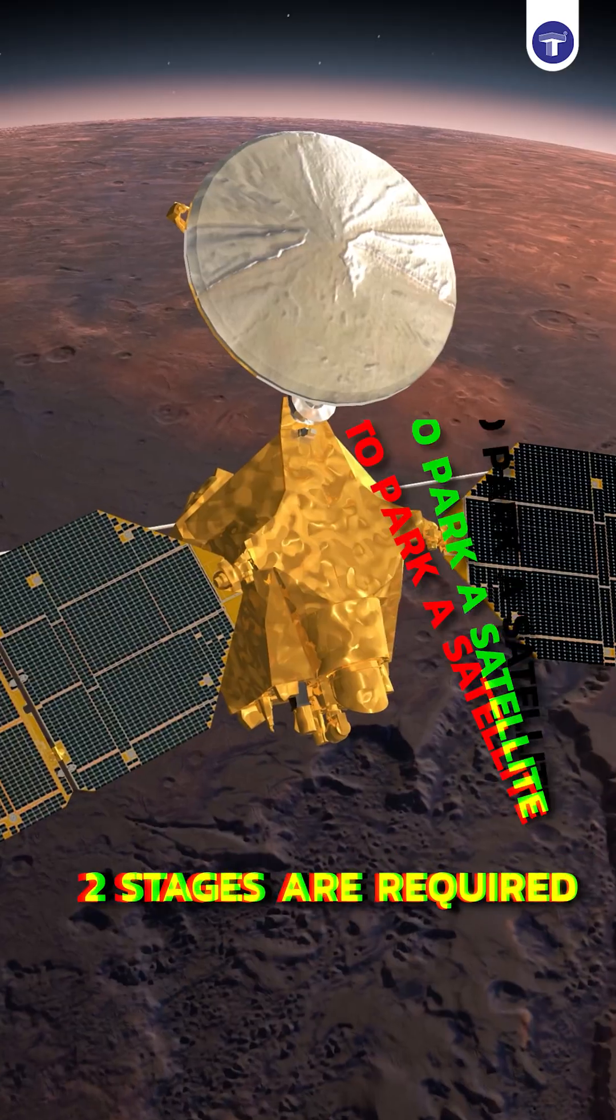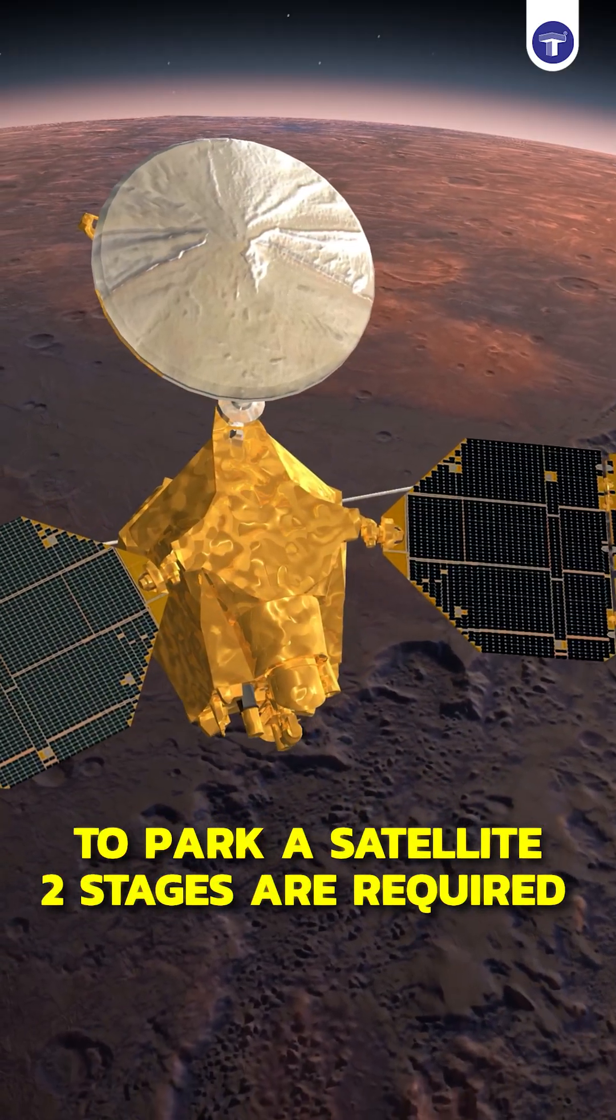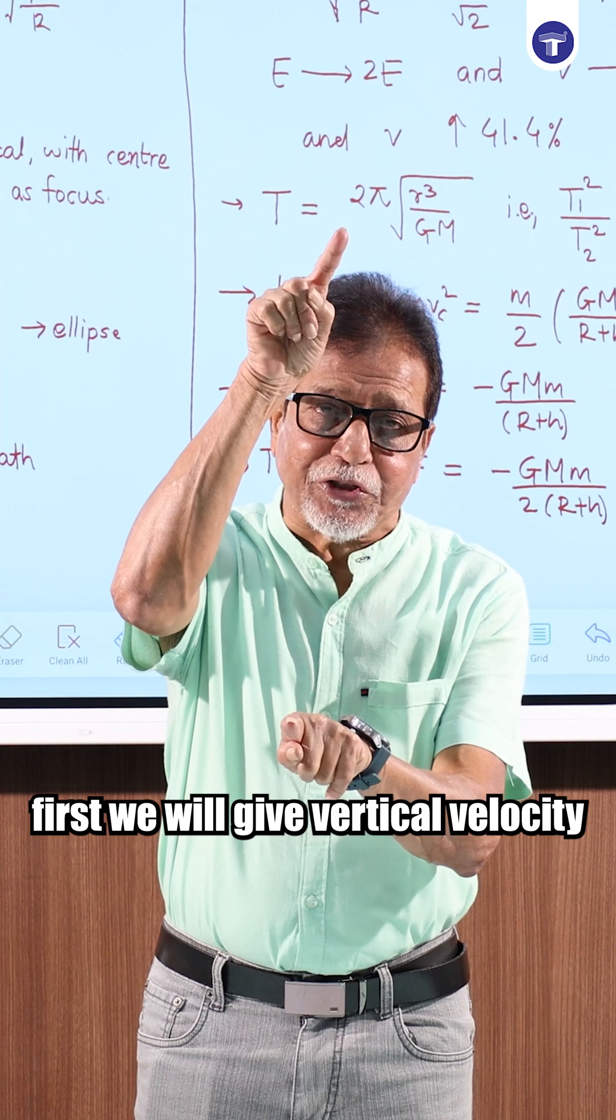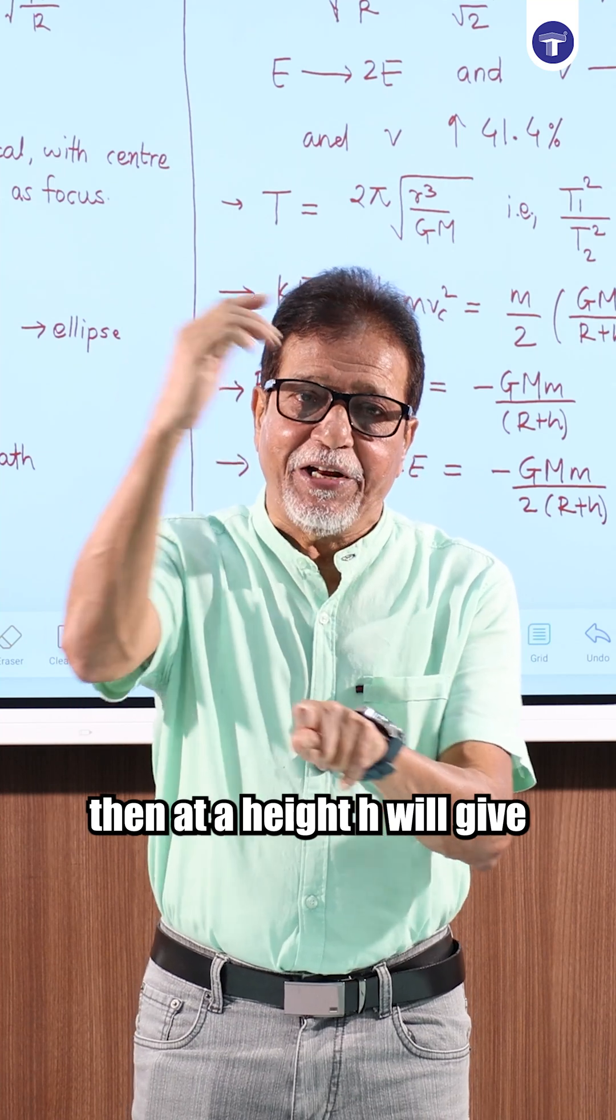Let us talk about the satellite today. To park a satellite, at least two stages are required. First, we will give vertical velocity, and then at a height h, we will give horizontal push.